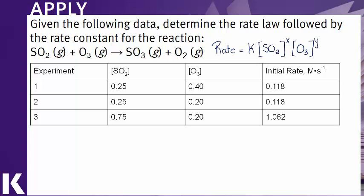The first thing you might want to do is write out a generic rate law. So here we have sulfur dioxide to some exponent. We don't know what it is yet. We have ozone also to an unknown exponent and we have our rate constant. We're going to use this data to fill in those values.